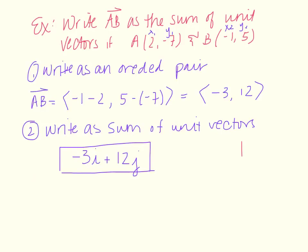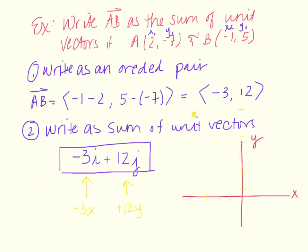On the coordinate plane, negative 3i means going back 3 units in the x-direction, and 12j means going positive 12 units in the y-direction. So the terminal point is at (-3, 12). That is the vector AB represented graphically as negative 3i plus 12j.